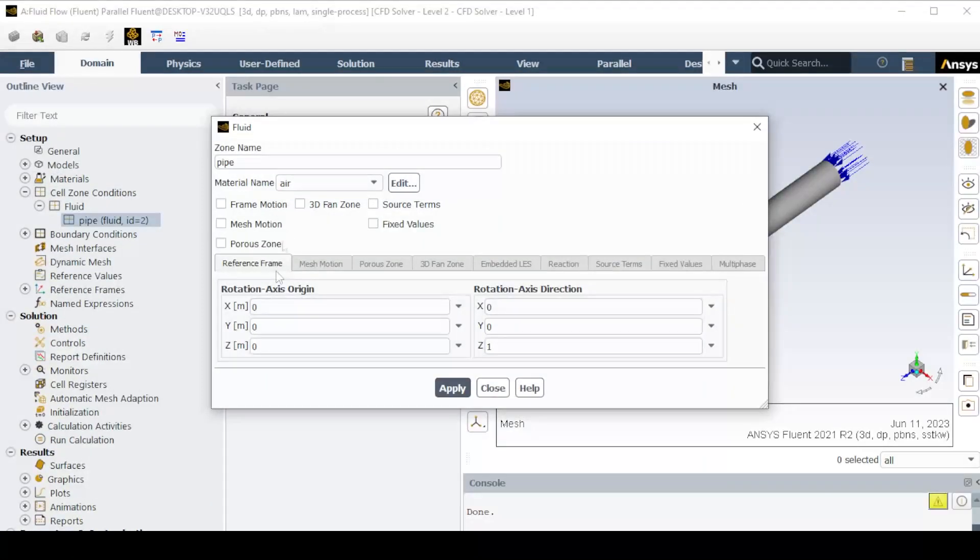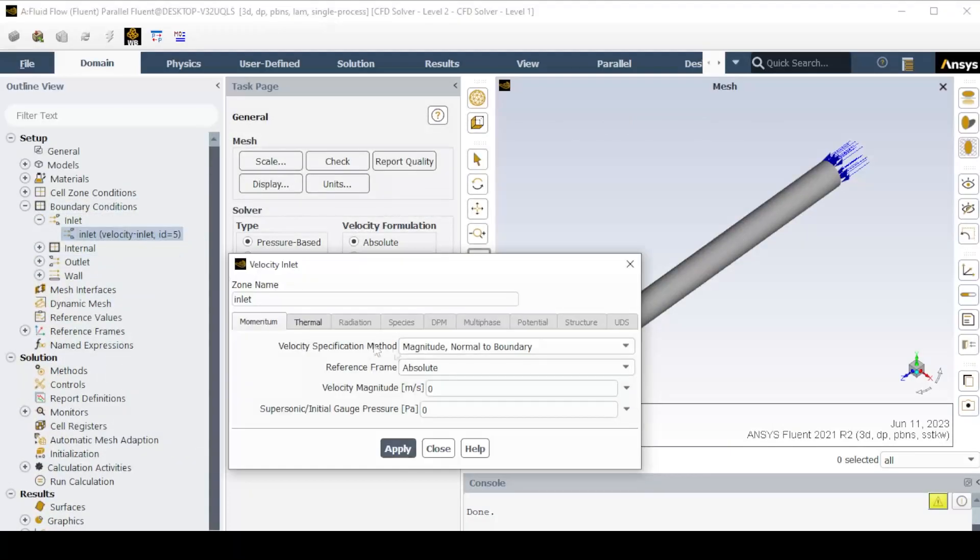In Cell Zone Conditions, change material from air to water liquid. In Boundary Conditions, edit inlet condition and give velocity and temperature.